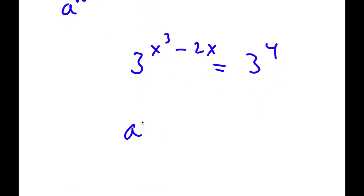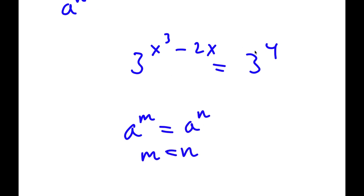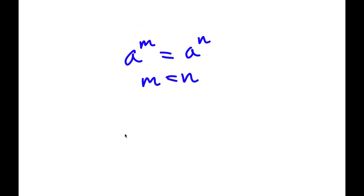Now, if I have something in the form a to the power of m equal to a to the power of n, this means that m equals n. So in this case, x to the power of 3 minus 2x is equal to 4.